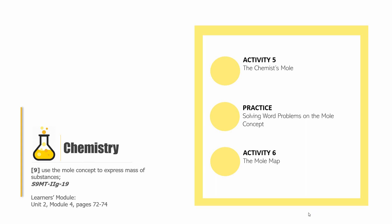Hello and welcome back to Grade 9 Chemistry. This is Chemistry 14 and it is divided into three parts. The first part is Activity Number 5, The Chemist's Mole. The second part is a practice on solving word problems on the mole concept. And the last part is Activity Number 6, The Mole Map. We're still trying to finish Learning Competency Number 9: use the mole concept to express the mass of substances.